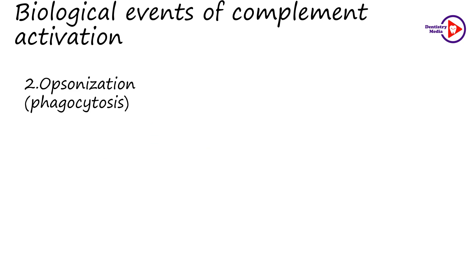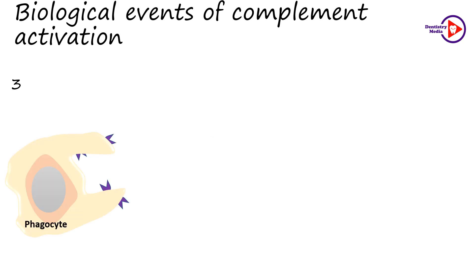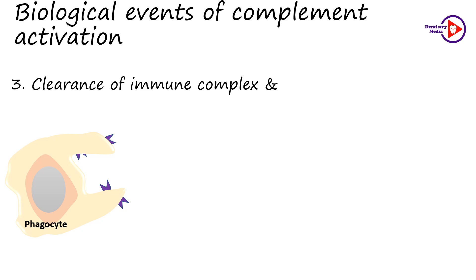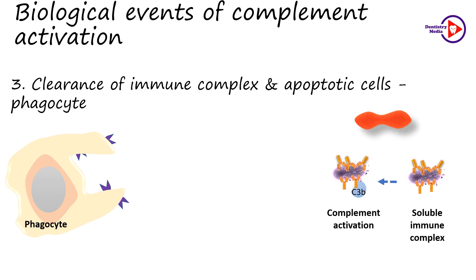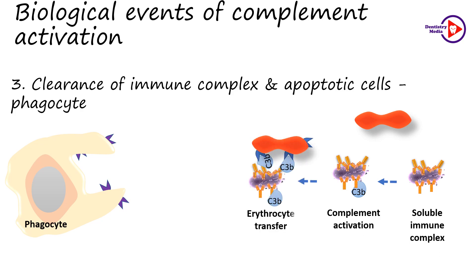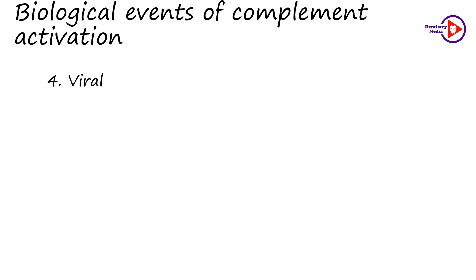The second biological effect is opsonization. The complement protein C3B acts as an opsonin. The process is called opsonization, wherein microbes such as bacteria and viruses are phagocytosed much better in the presence of the opsonin C3B, because C3B receptors are present on the surfaces of many phagocytes. Therefore, complement proteins enhance phagocytosis by marking an antigen. The next is clearance of immune complexes and apoptotic cells by phagocytosis. The coating of soluble immune complexes with C3B facilitates their binding to CR1 on erythrocytes, which then transfer these immune complexes to the liver and spleen where they are phagocytosed.